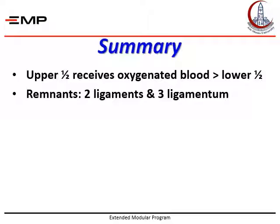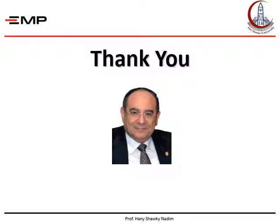In summary, the upper half of the embryo's body receives highly oxygenated blood compared to the lower half, and there are remnants of the fetal circulation — two ligaments and three ligamenta. Thank you, and we will meet again in other lectures. If you find these lectures useful, please hit like and subscribe to the channel.